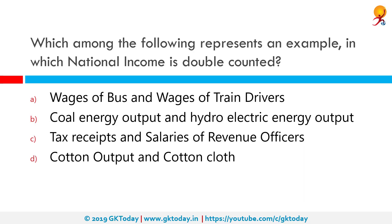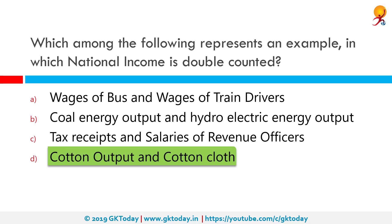Which among the following represents an example in which national income is doubled? The correct answer is cotton output and cotton cloth. When calculating national income, if cotton output is counted and then the same output used to create cotton clothes is also counted, this is an example of double counting.